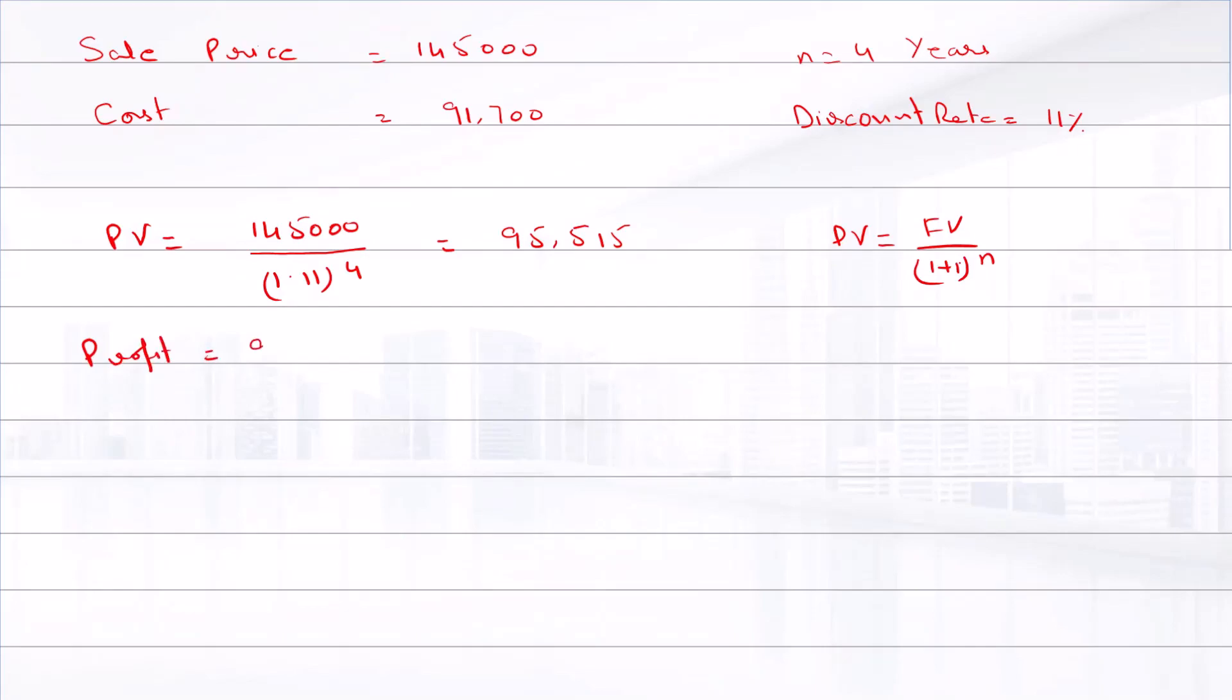The firm's profit is $95,515 minus the cost price of $91,700, which equals $3,816 approximately. To find the interest rate at which the firm will break even, we need to find the interest rate using the present value of the lump sum.